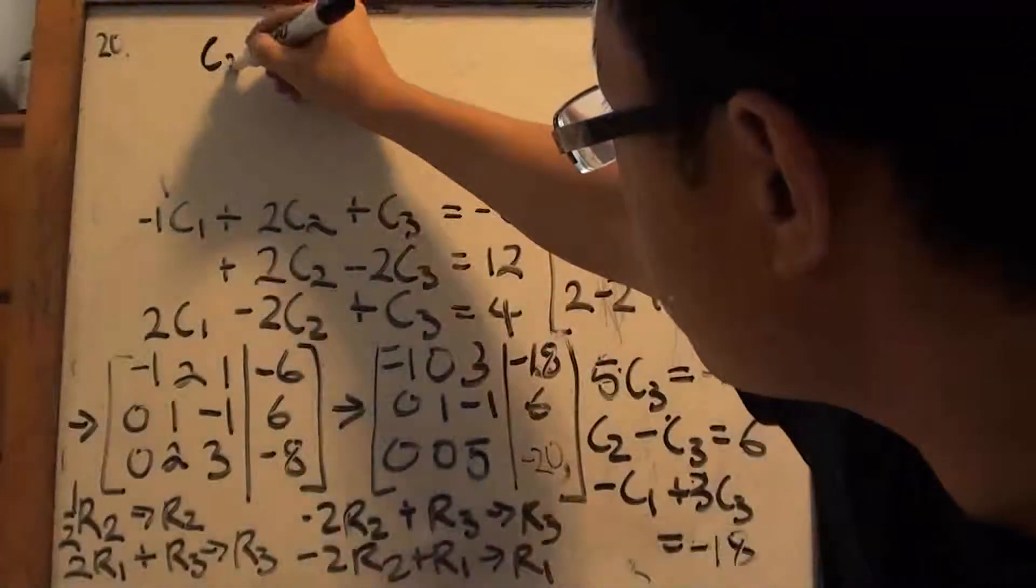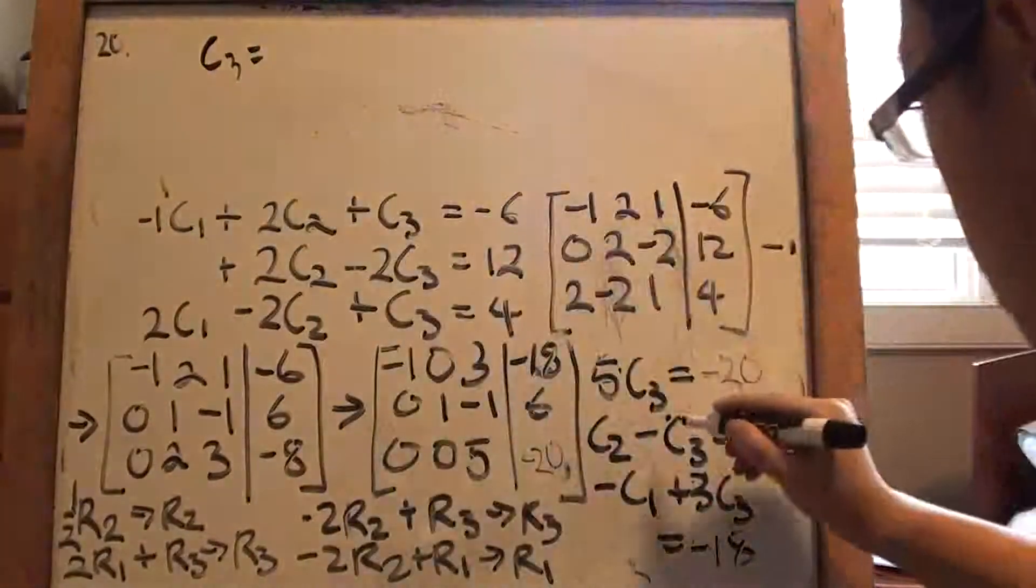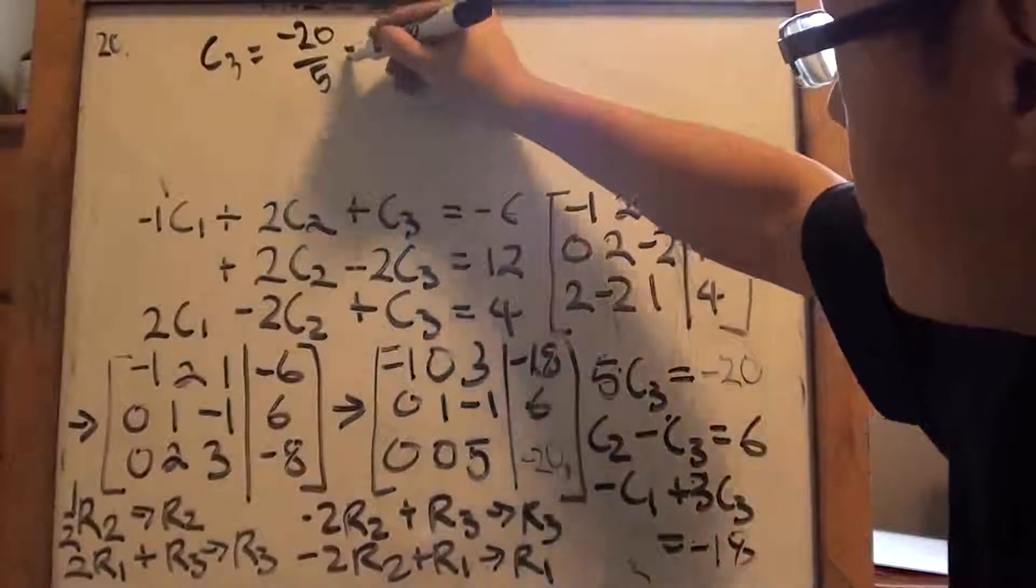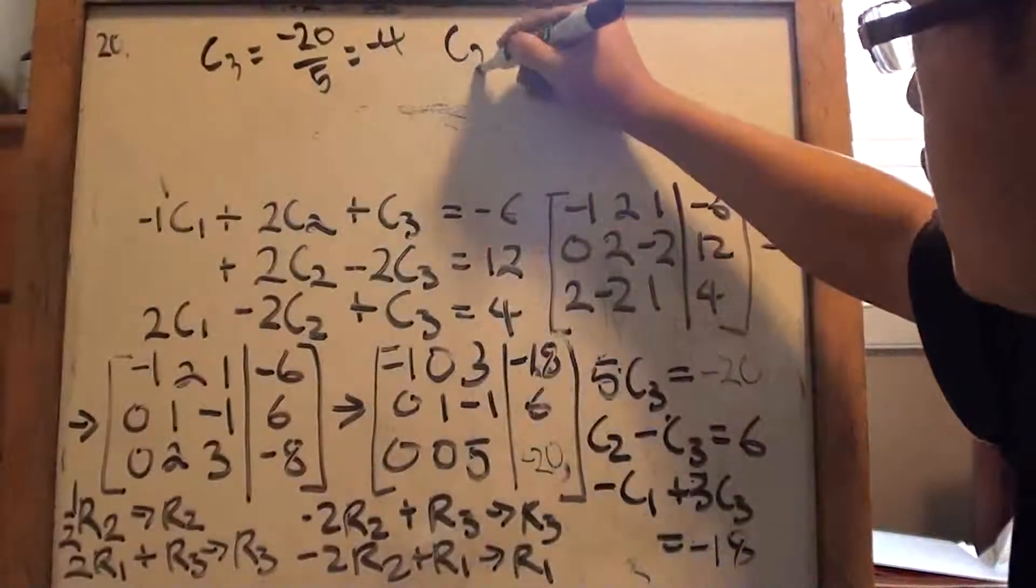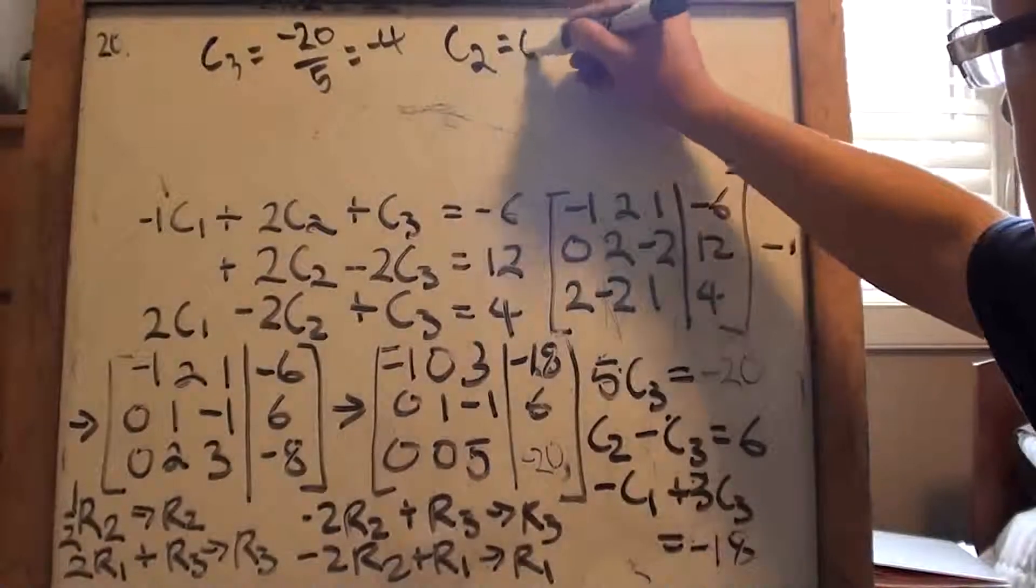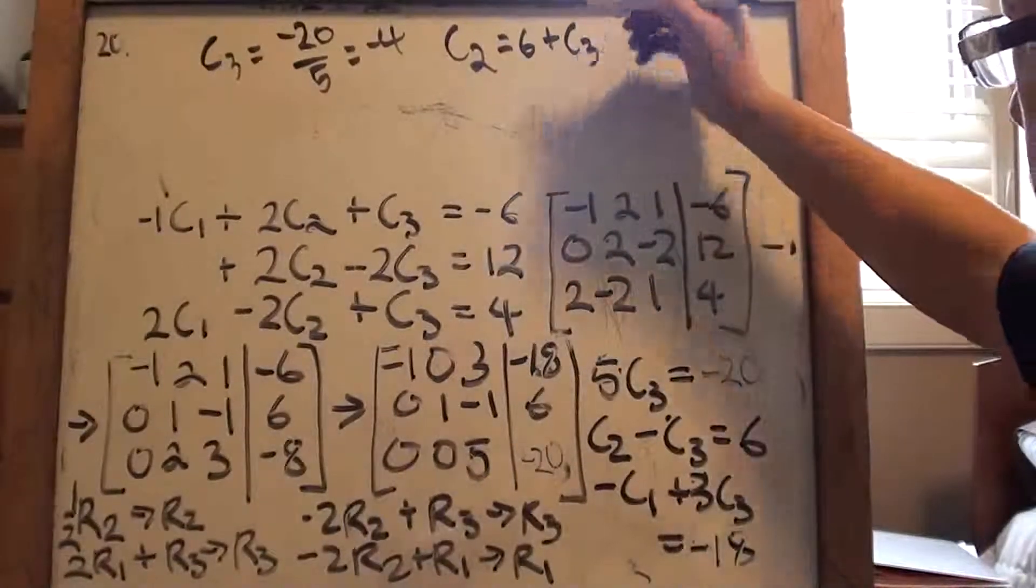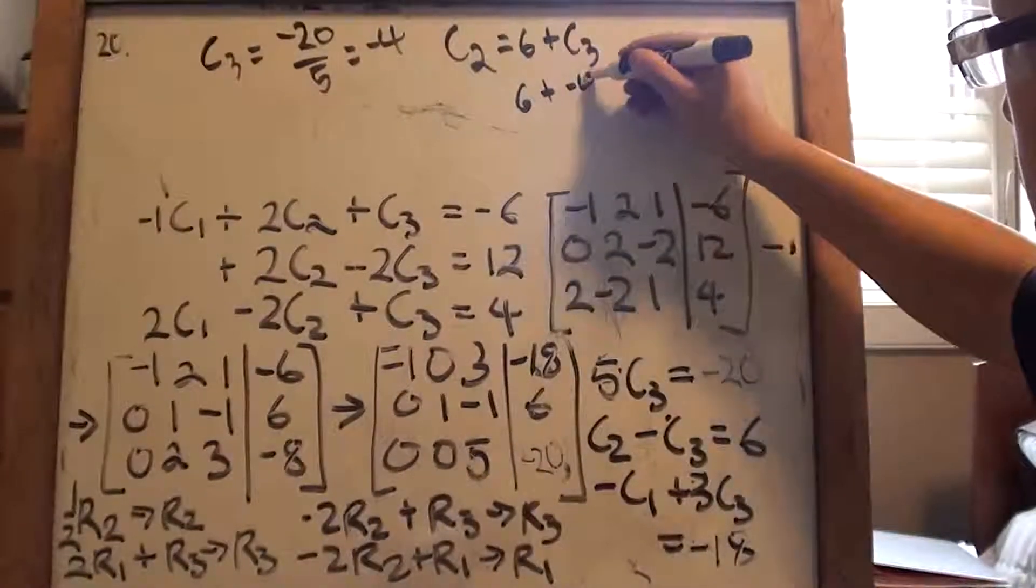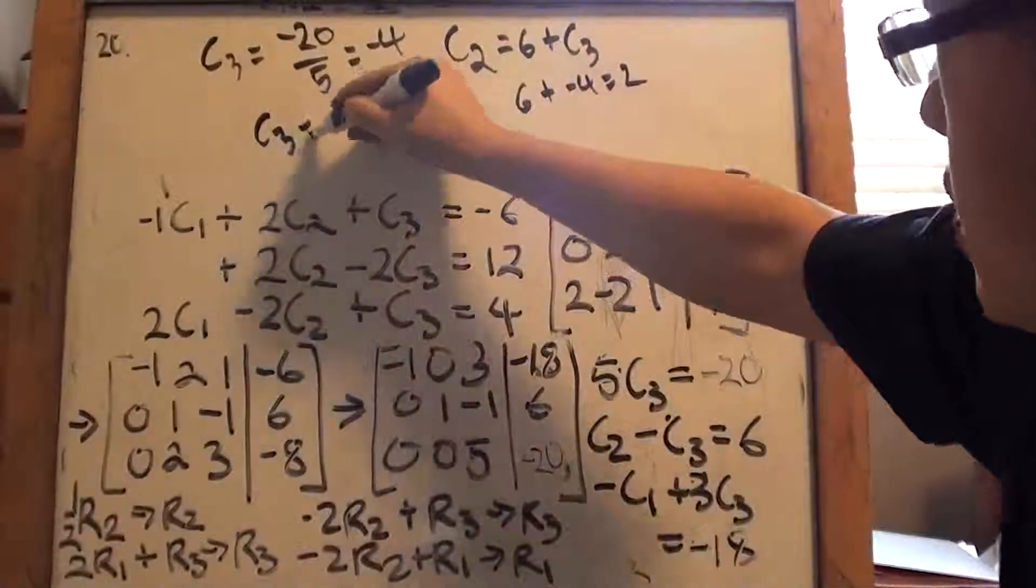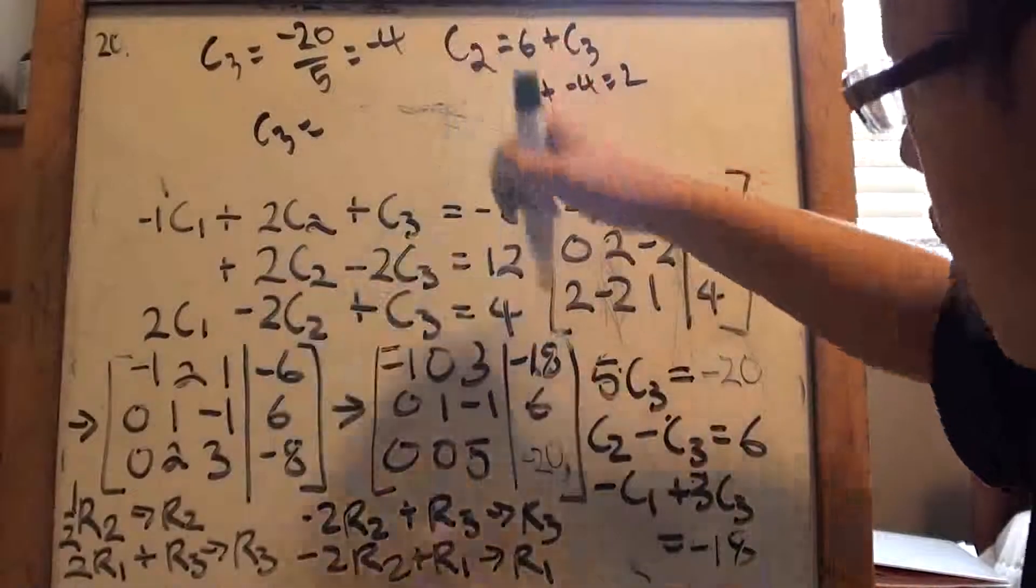Okay, so that's gonna be, so c3 is gonna be negative 20 divided by 5, that's just negative 4. c2 is gonna be, same thing as 6 plus c3, so that's gonna be 6 plus negative 4, that's gonna give me 2.